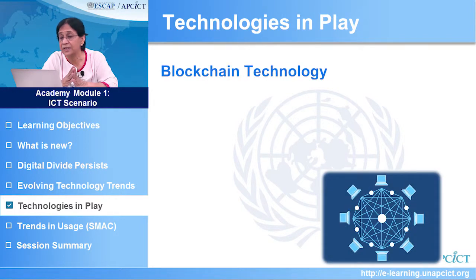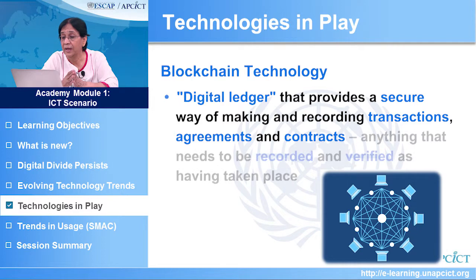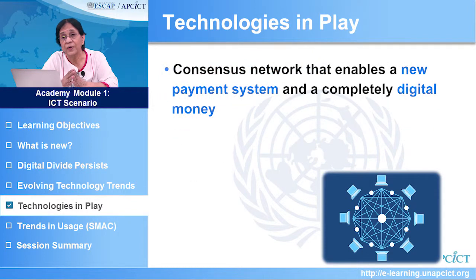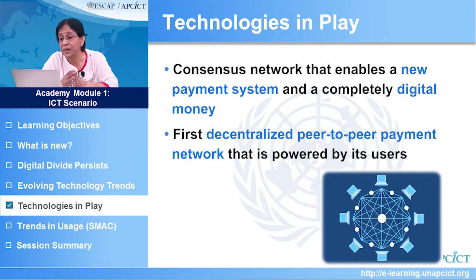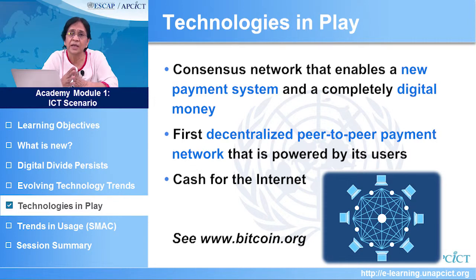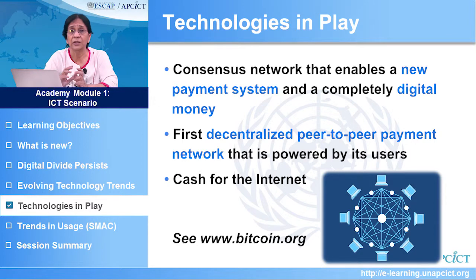Blockchain technology is an example of a stack emerging out of Bitcoin. Blockchain is a digital ledger that provides a secure way of making and recording transactions, agreements and contracts — anything that needs to be recorded and verified as having taken place. Bitcoin is digital currency, a form of complete digital money. It is the first decentralized peer-to-peer payment network powered by users with no central authority or middlemen. From a user perspective, Bitcoin is pretty much cash for the internet. A word of caution: there are concerns expressed in several countries and reserve banks about Bitcoin being used as a digital currency, and I draw your attention to this technology without making any judgments as to its value or lack of it.